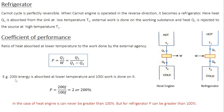For example, if a refrigerator absorbs 200 Joules at a lower temperature and 100 Joules of work is done on it by the external agency, then the coefficient of performance is 200 divided by 100, which equals 2, or 200%. You can clearly see the difference: the efficiency of a heat engine can never exceed 100%, and even a Carnot engine cannot reach 100% efficiency. On the other hand, the coefficient of performance of a refrigerator can be greater than 100%.